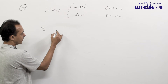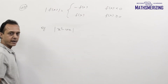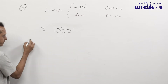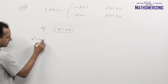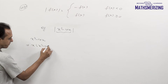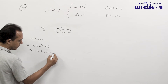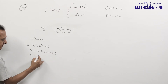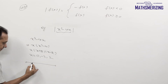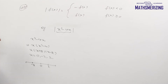Say for example, suppose I have to write mod of x cubed minus 4x. What I will do is, I will write this expression x cubed minus 4x and factorize it: x into (x squared minus 4), which is x(x+2)(x-2). I will get the roots 0, minus 2, and plus 2, and put them on the number line: minus 2, 0, and plus 2.